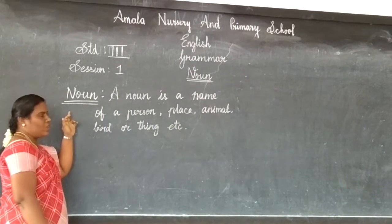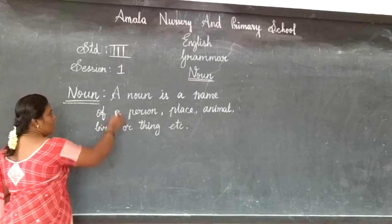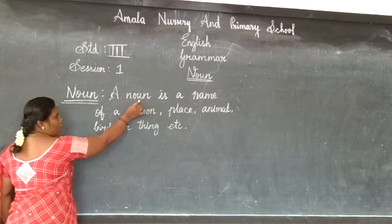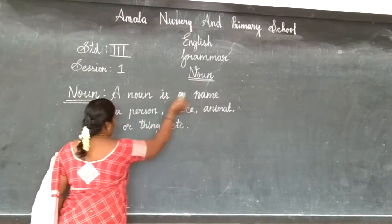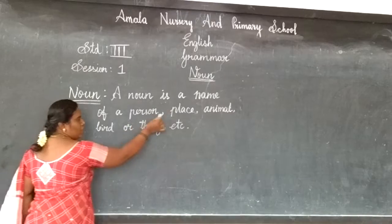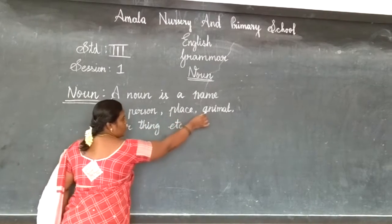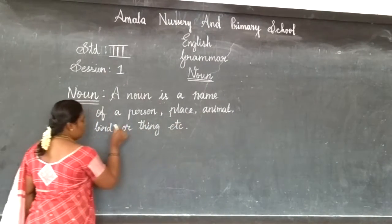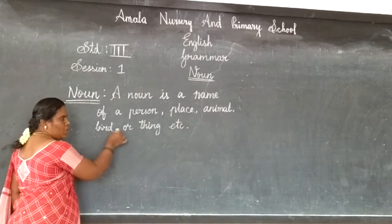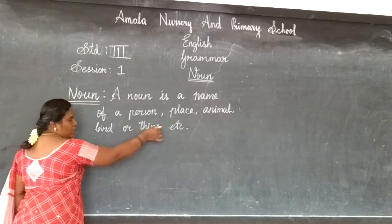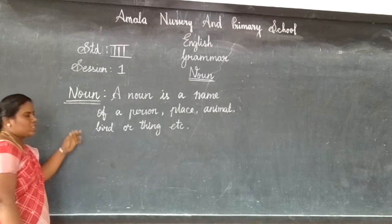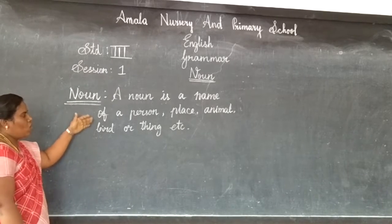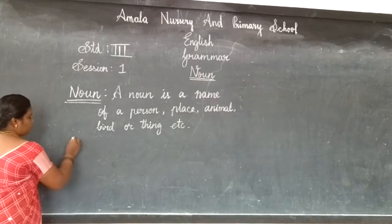A noun is the name of a person, place, animal, bird, or thing etc. Now let's see some examples.